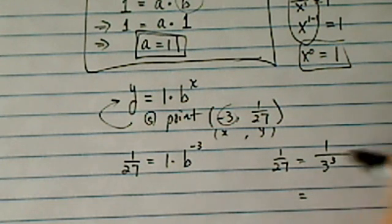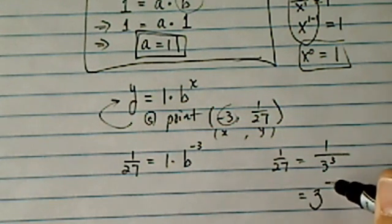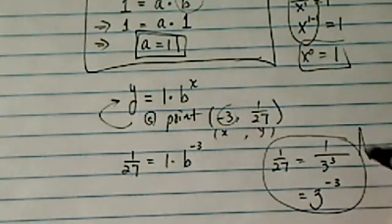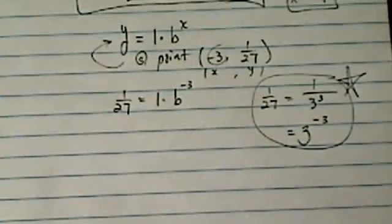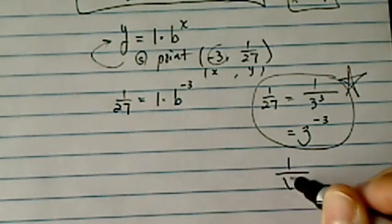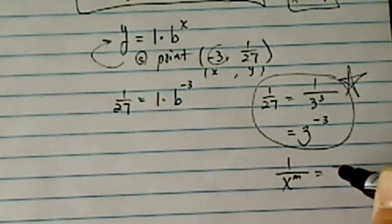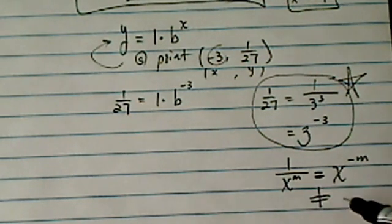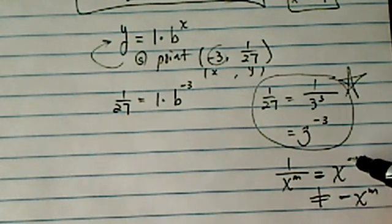As you know, one over anything is equal to that thing to the negative exponent. So this property, actually, is pretty important. It basically says one over X to the M is equal to X to the minus M. It does not equal to minus X to the M. It's never in the front.